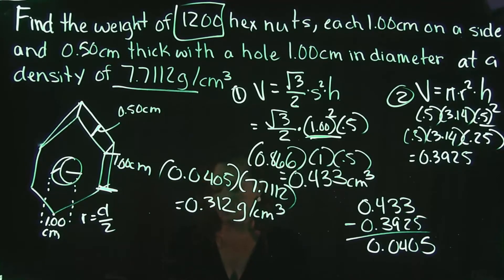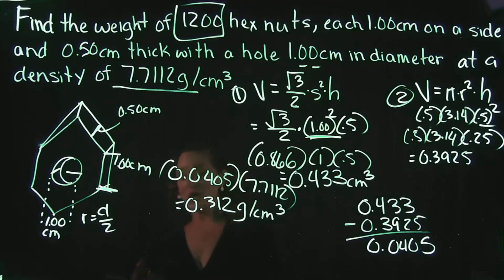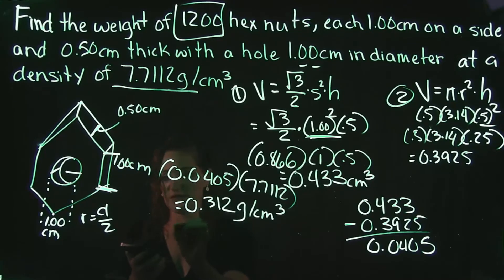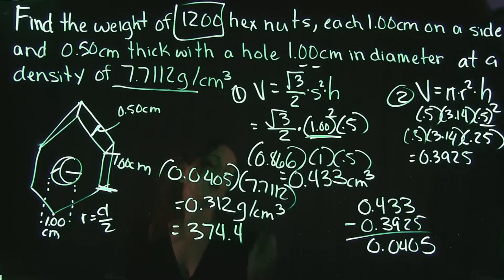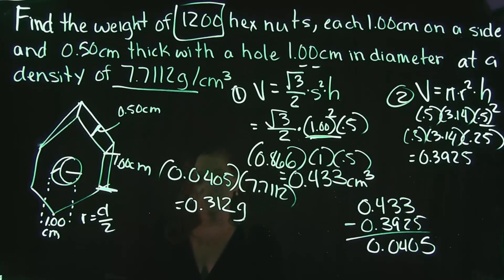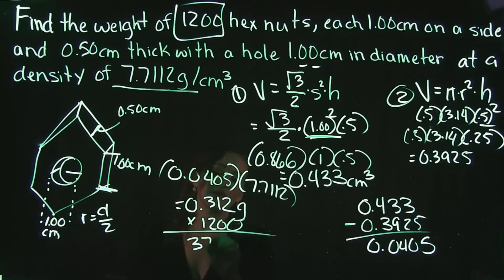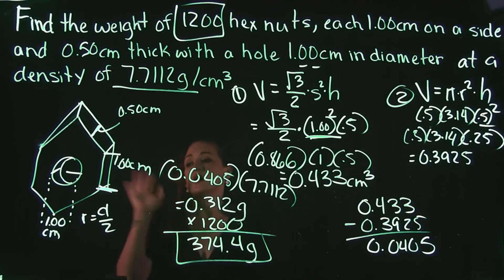Our problem asks for the weight of 1,200 hex nuts, so we multiply by 1,200. Rounding to two decimal places: 0.312 times 1,200 equals 374.4 grams. That is the total weight of 1,200 of these hex nuts.